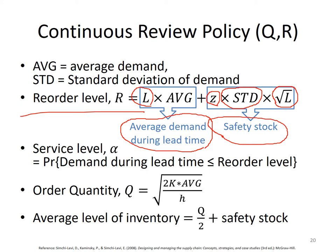The inventory reaches its minimum level just before the shipment arrives — which is the safety stock — and then when the shipment arrives the inventory position reaches the maximum point, which is Q plus safety stock. So minimum inventory is safety stock, maximum inventory is Q plus safety stock, and average inventory is Q/2 plus safety stock.